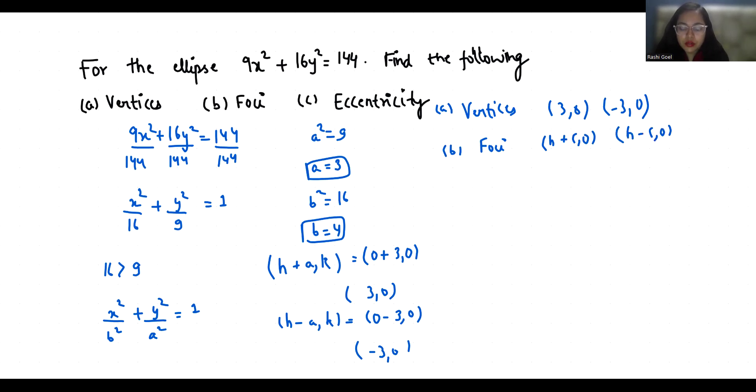So for the value of c: a² = b² + c², so c² = b² - a². b² is 16 minus 9, so c² is 7, and c is √7.